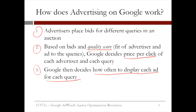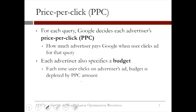Let's begin by thinking about the data that we need for this model. In particular, let's think about the price per click. As we just discussed, Google decides each advertiser's price per click. The price per click is how much each advertiser pays Google when a user clicks on the ad for that query.